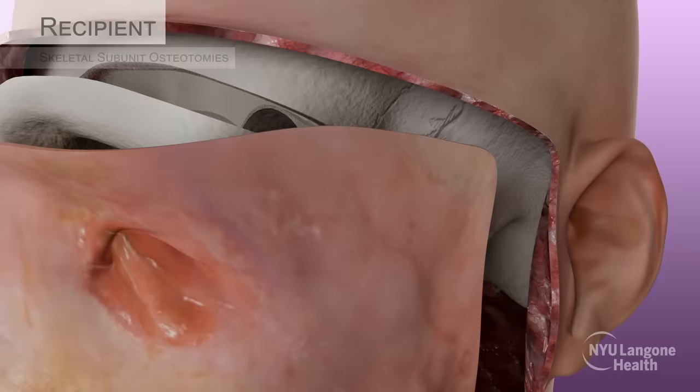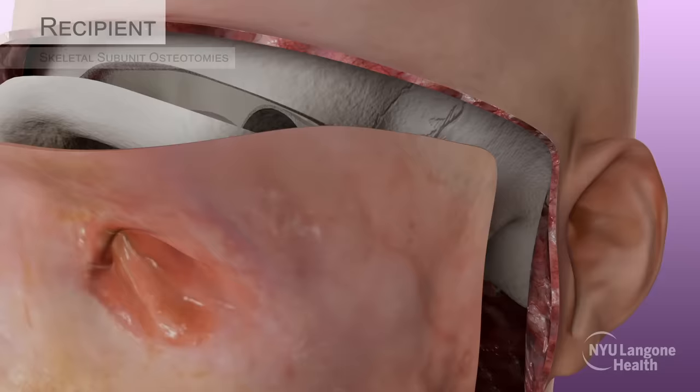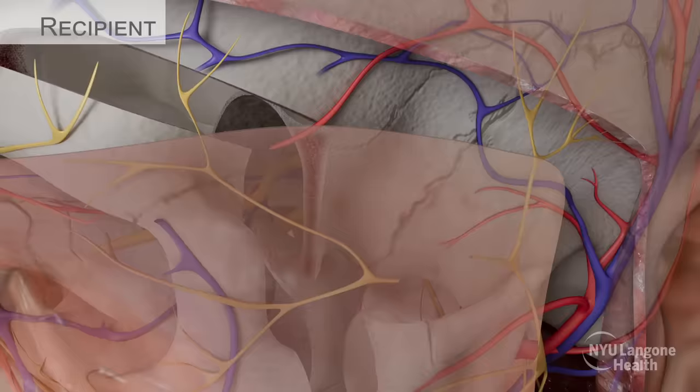Attention was directed to the left orbit of the patient, where periorbital tissue was removed to provide optimal access to the ophthalmic vein, artery, and optic nerve, which were isolated and transected in preparation for transplantation.